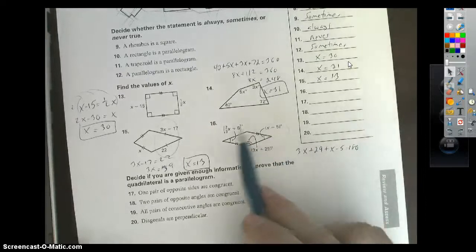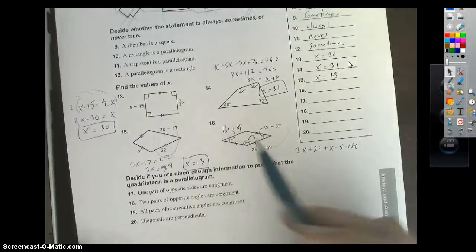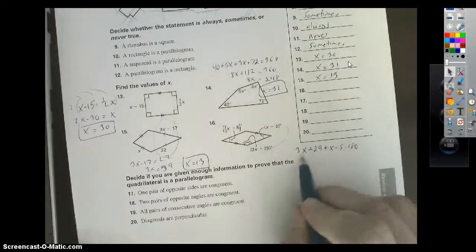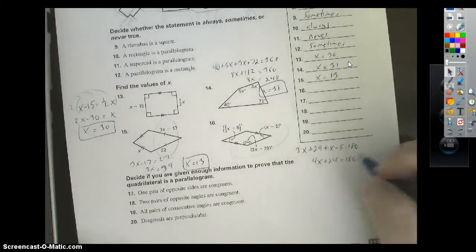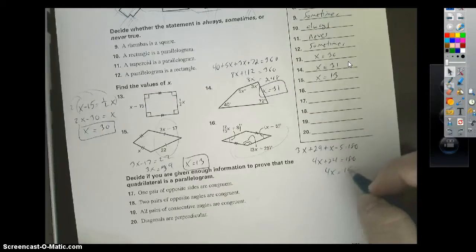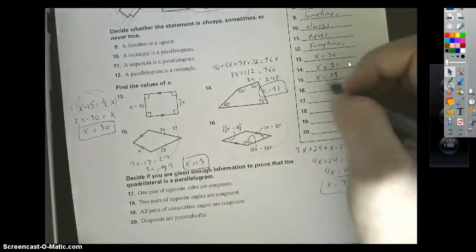Would you be correct if you set these equal? Absolutely. It's just a little extra step. That's all. 3x and x is 4x. 29 minus 5 is 24. Subtract that over, 156, divide by 4, x equals 39.